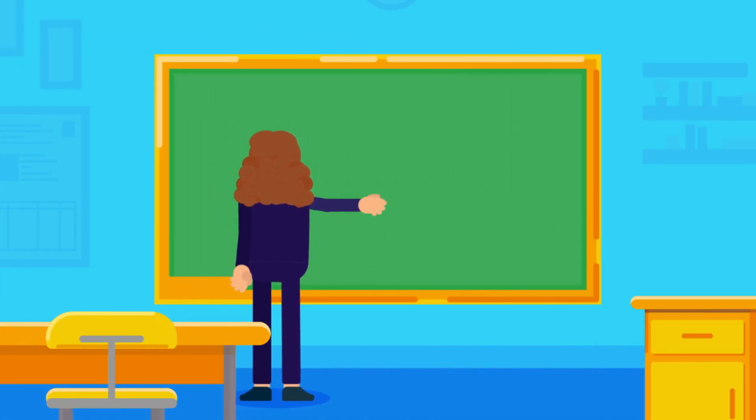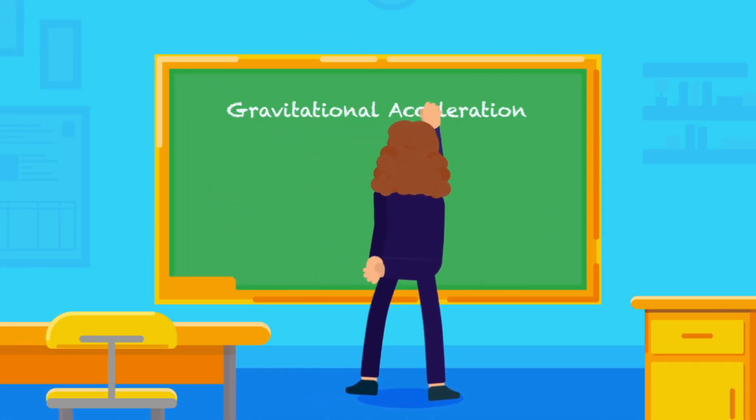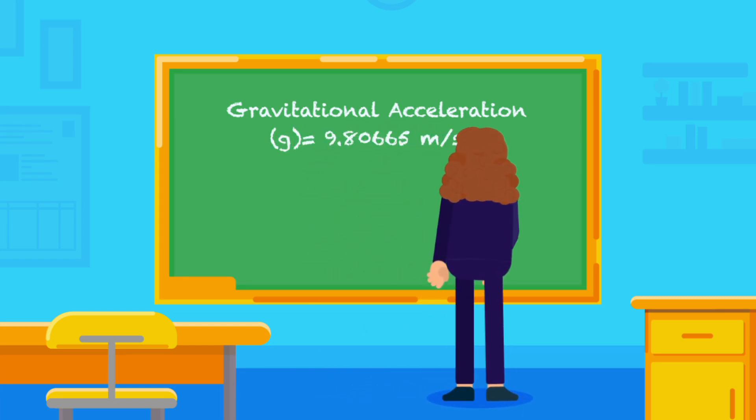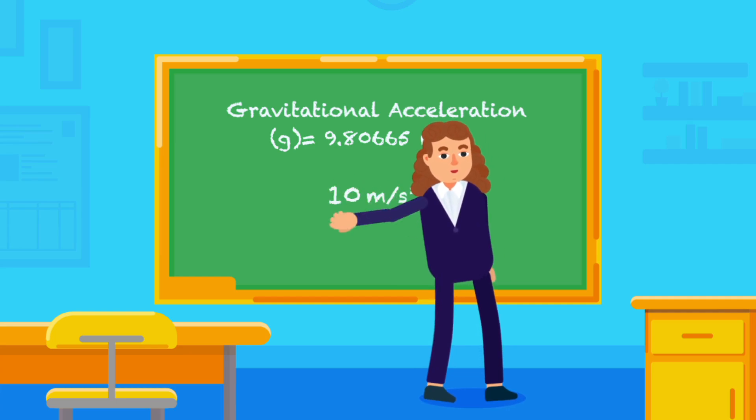The exact magnitude of the gravitational acceleration, or g, is 9.80665 meters per second squared, or practically 10 meters per second squared.